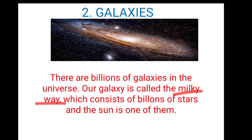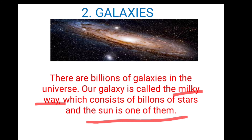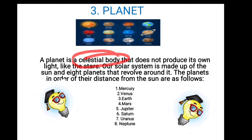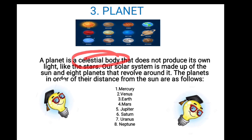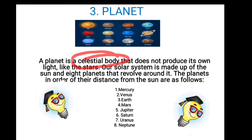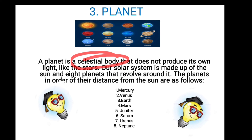Planet: a planet is a celestial body that does not produce its own light, like the stars. Our solar system is made up of the sun and eight planets that revolve around it. The planets in order of distance from the sun are as follows.